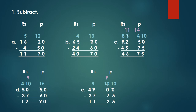Next example is B. 65 rupees 30 paise minus 24 rupees 60 paise. 0 minus 0 equals 0. Children, we cannot subtract 6 from 3, so we borrow. The 5 becomes 4 and the 3 becomes 13. 13 minus 6 equals 7. 4 minus 4 equals 0. 6 minus 2 equals 4. As a result, we get 40 rupees 70 paise.